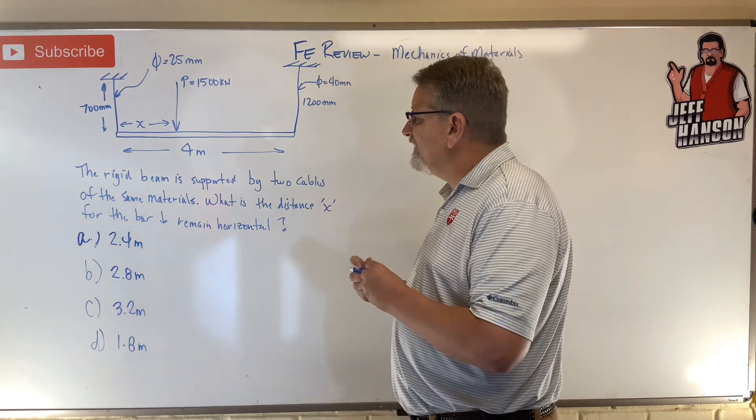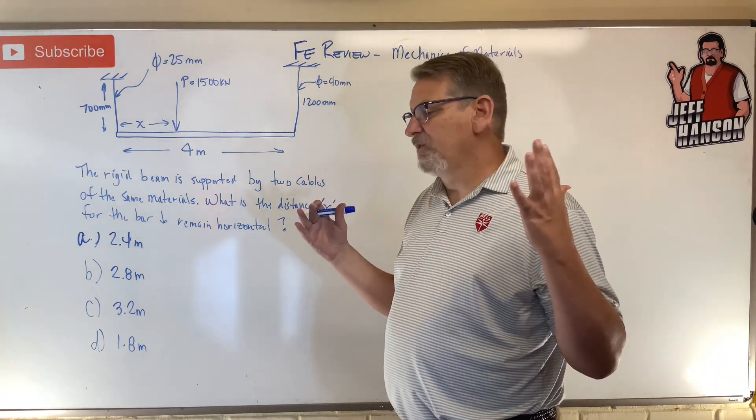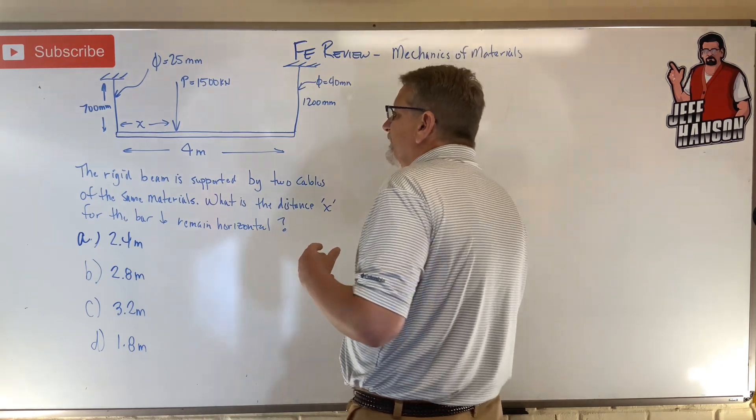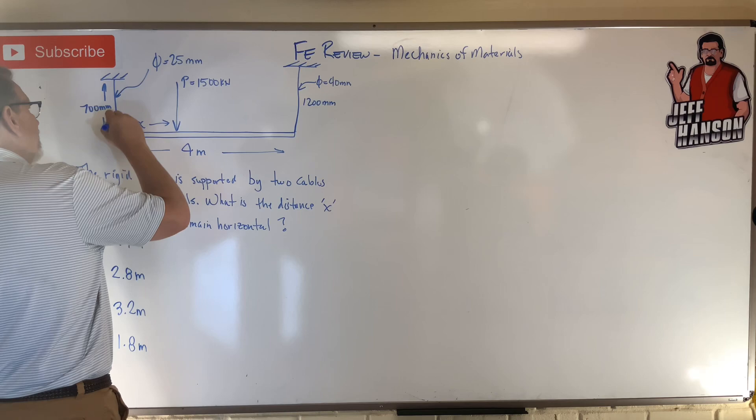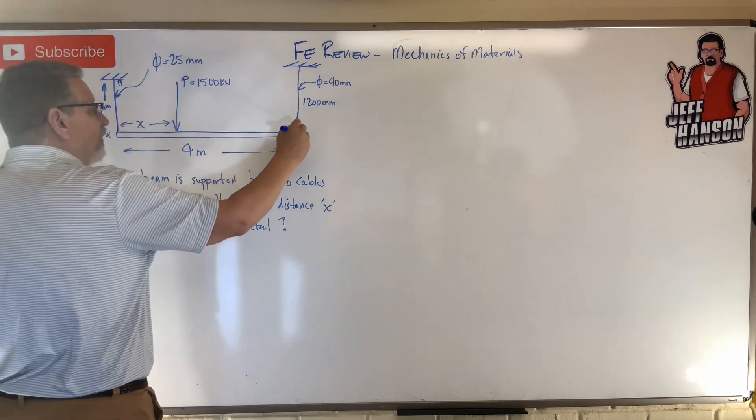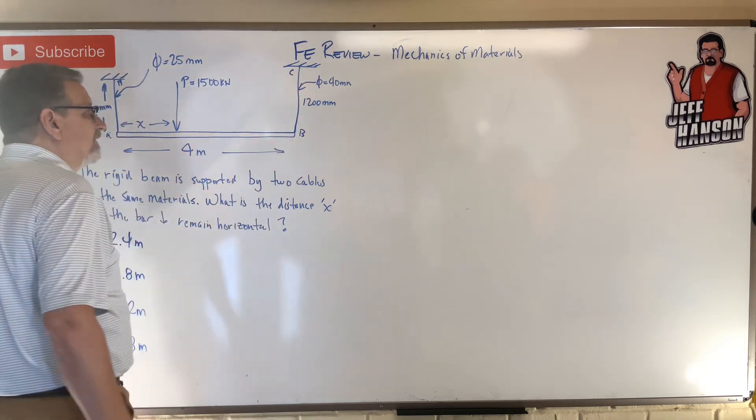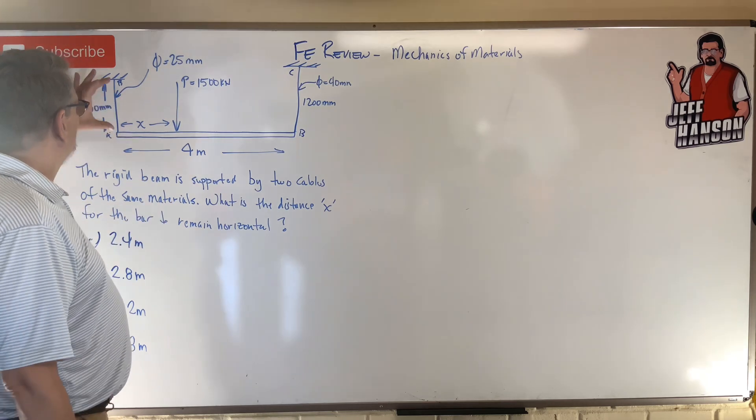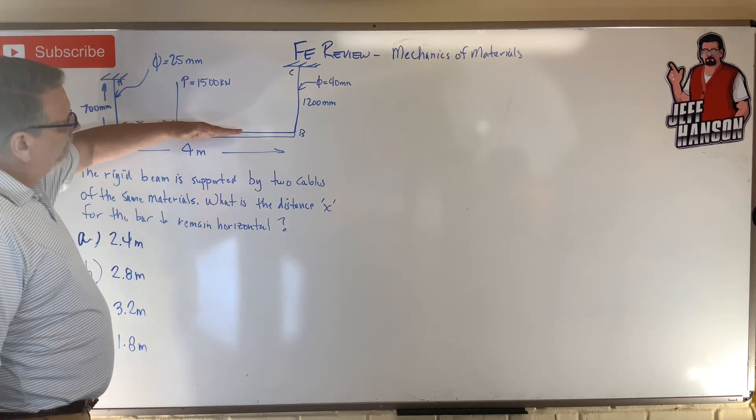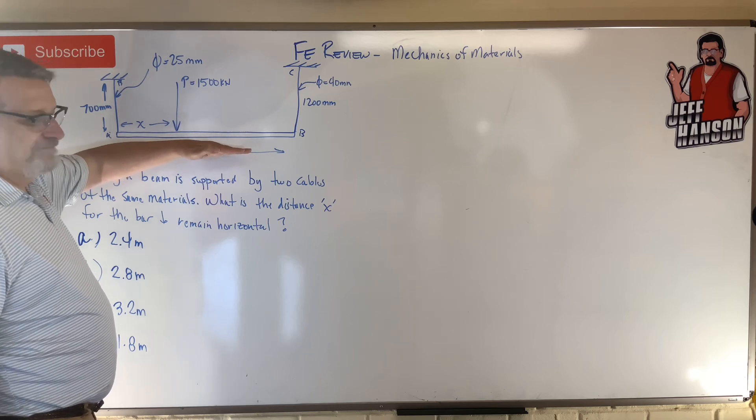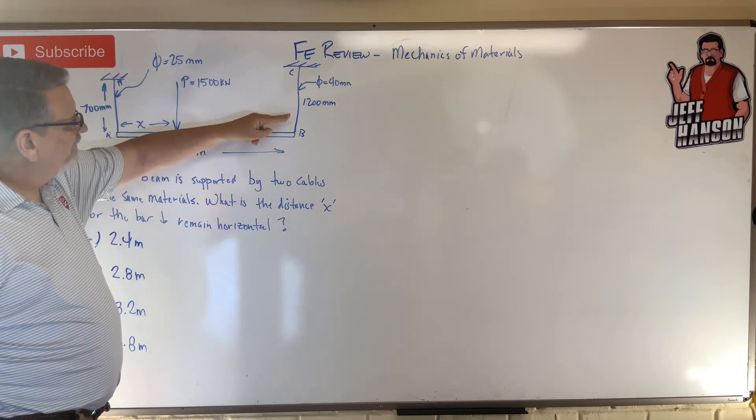Okay, did you work it out? Let's go. We're going to need some compatibility. Let's call this cable AB and we'll call this cable CD. Here's what I know: for this to remain horizontal, if the bar moves down like 10 millimeters, well then this one has to stretch 10 and that one has to stretch 10.